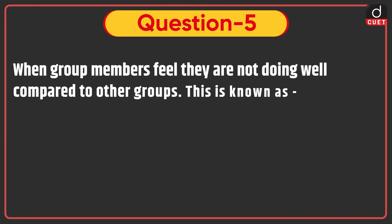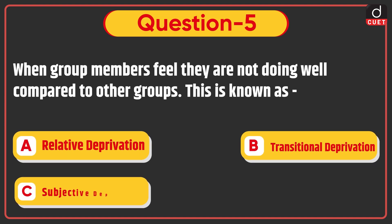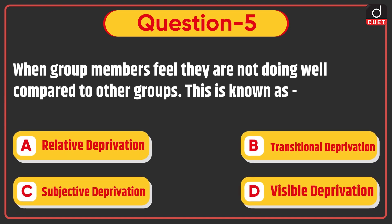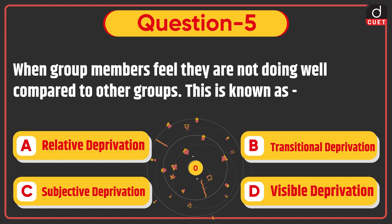Next question: When group members feel they are not doing well compared to other groups, this is known as — Relative Deprivation, Transitional Deprivation, Subjective Deprivation, or Visible Deprivation? The correct answer is Option A, Relative Deprivation.